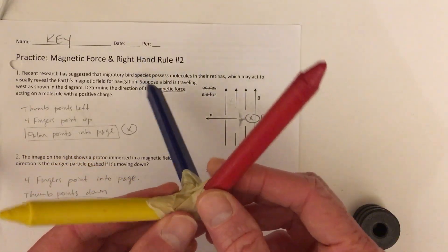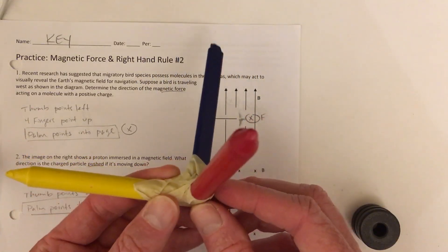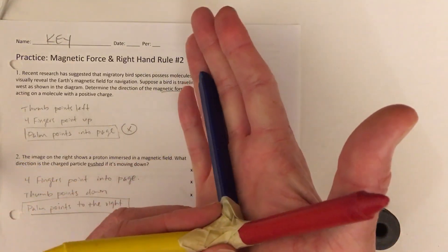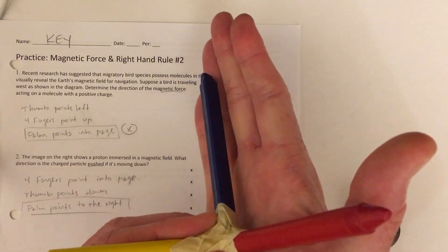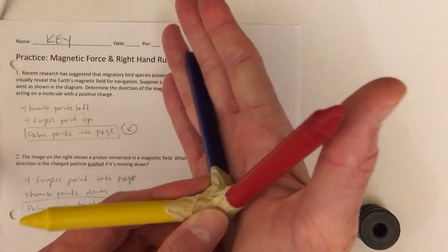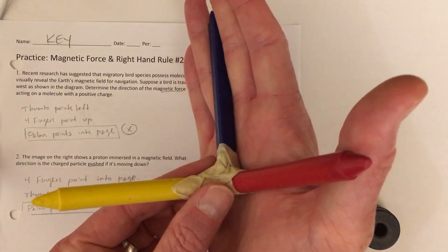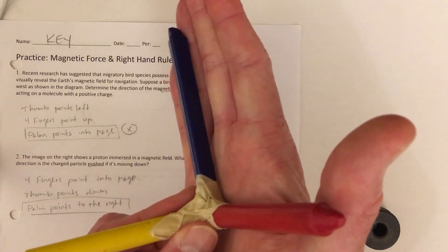You can visualize these three perpendicular directions by using your right hand and putting one of them in the direction of your four fingers, one of them in the direction of your thumb, and then the third direction points out of your palm. So those things are happening at right angles to each other.